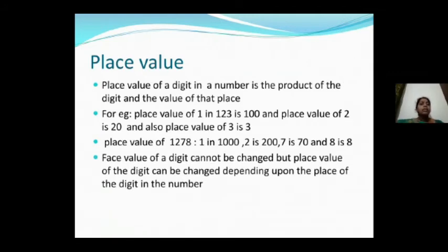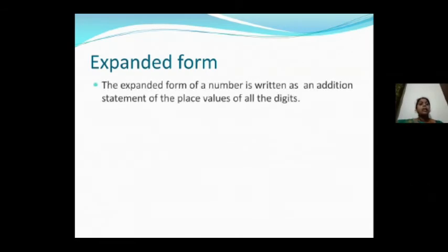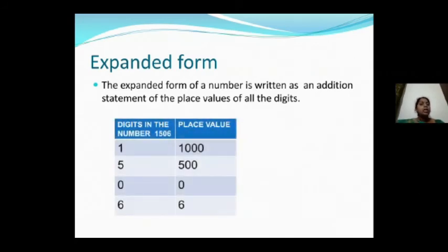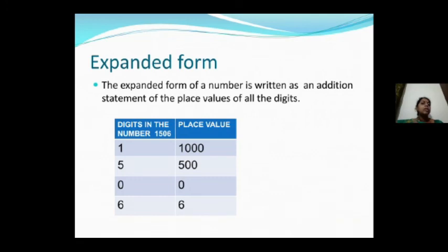The face value of a digit cannot be changed — face value doesn't change. But place value depends upon the position, so it will change. Expanded form: what do you mean by expanded form? It is written as an addition statement of the place values of all the digits — it means splitting up the place values. For example, 1506: 1 is in thousands, so place value of 1 is 1000. 5 is in hundreds, so place value of 5 is 500. 0 is in tens — 0 into 10 is 0. 6 is in ones, place value of 6 is 6.